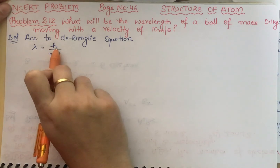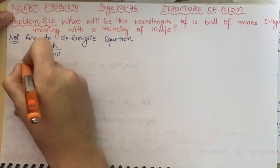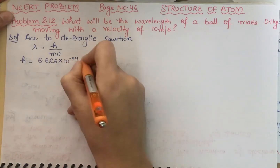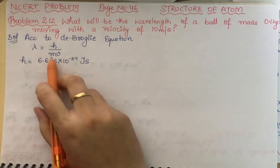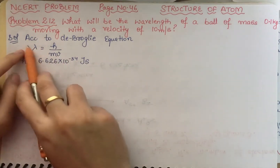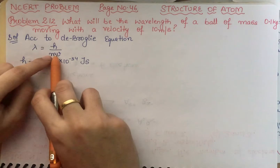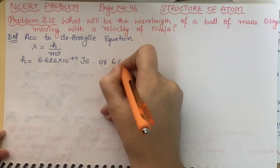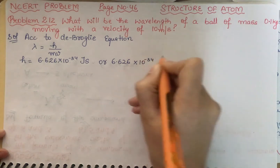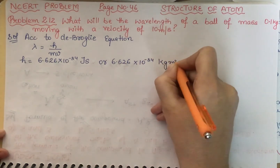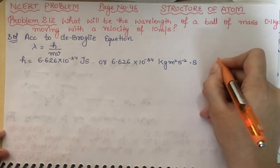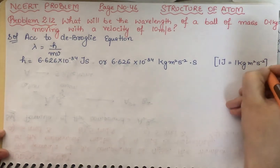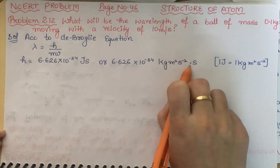We know the values of the other terms. h is Planck's constant whose value is 6.626 into 10 raised to power minus 34 joule second. Since mass is in kg, we convert joule: one joule equals one kg meter square second inverse square. So h becomes 6.626 into 10 raised to power minus 34 kg meter square second inverse square.